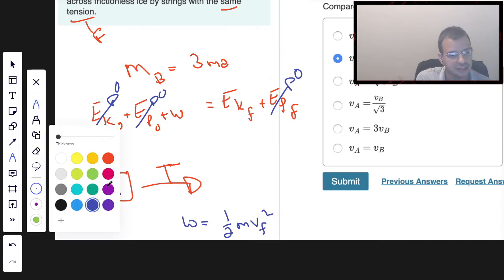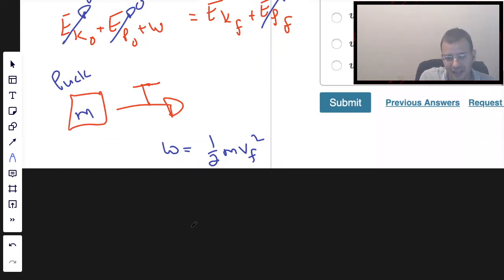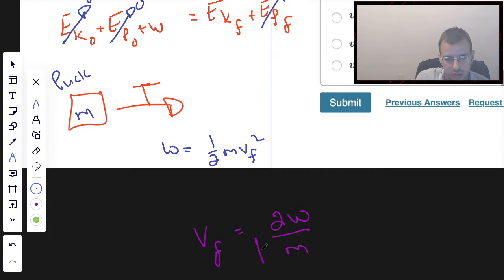So solving this for V final, we're going to say that V final squared equals 2 work over M. And then if I get rid of the squared, I'm basically going to get rid of that using a square root.